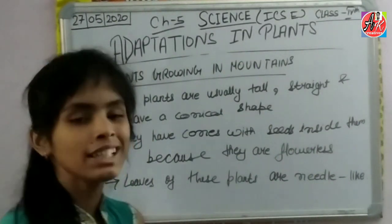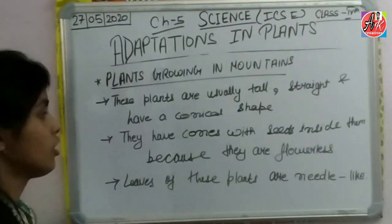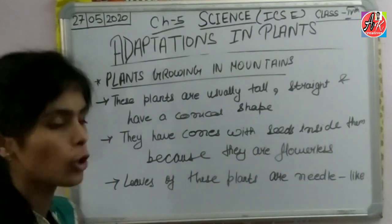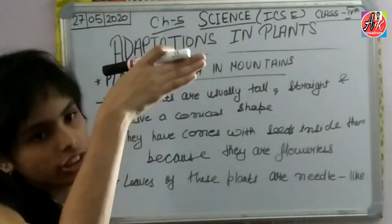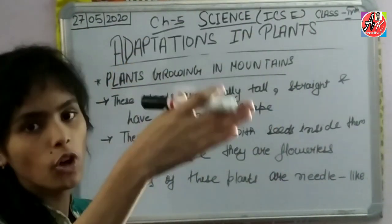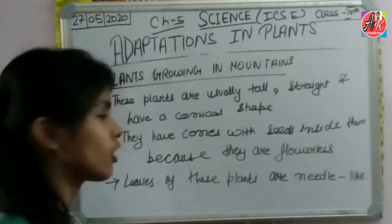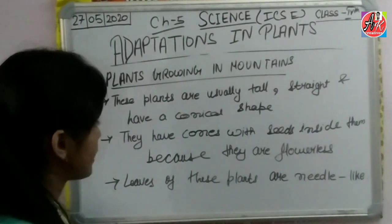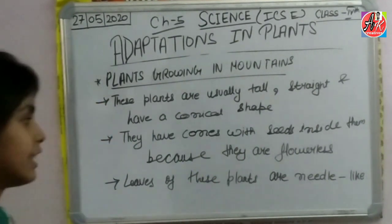Because in the mountains, snow or rainfall occurs frequently. The conical shape allows snow to slide down easily rather than accumulate on the branches. They have cones with seeds inside them because they are flowerless plants.